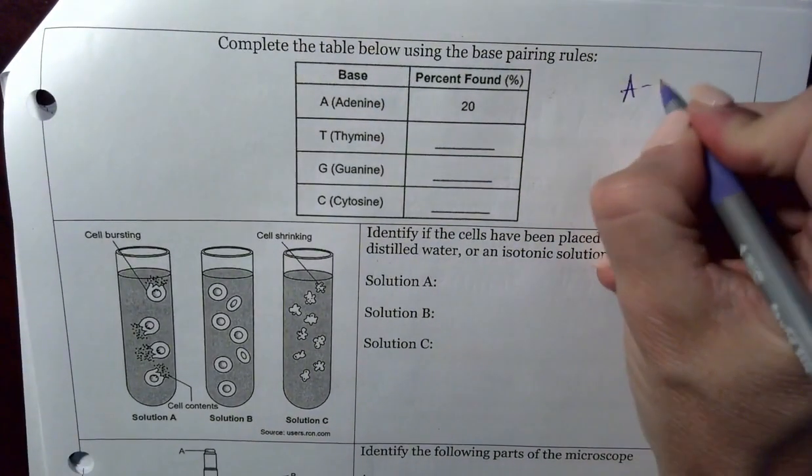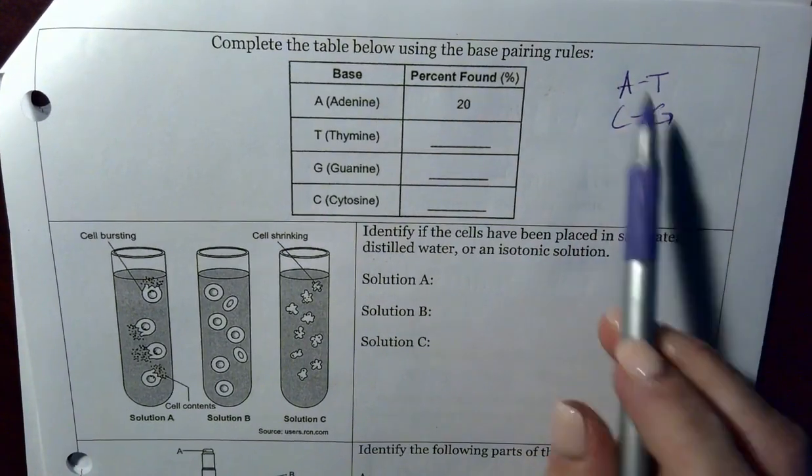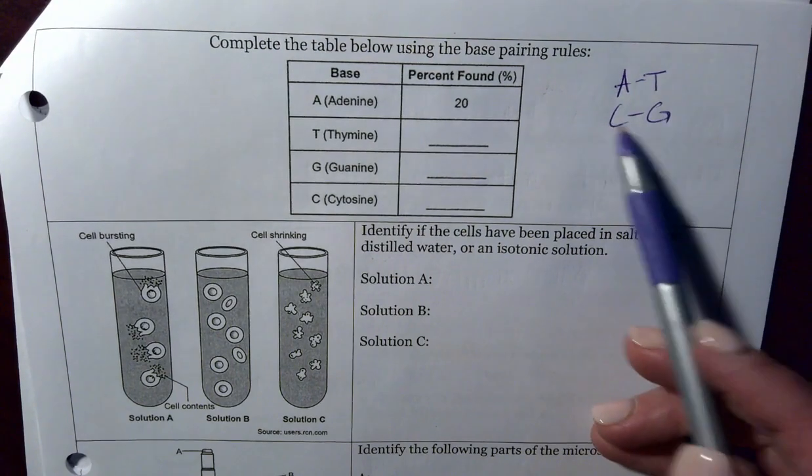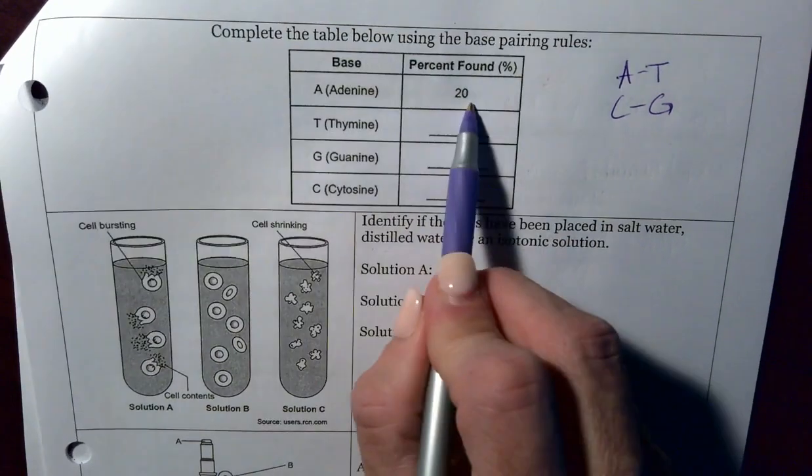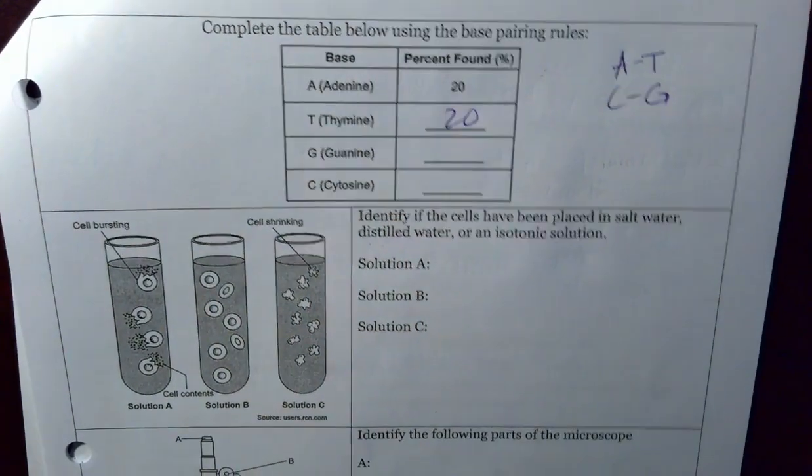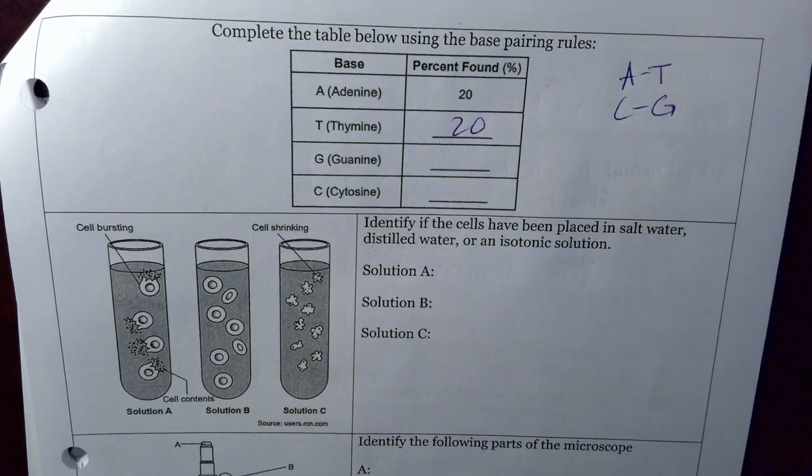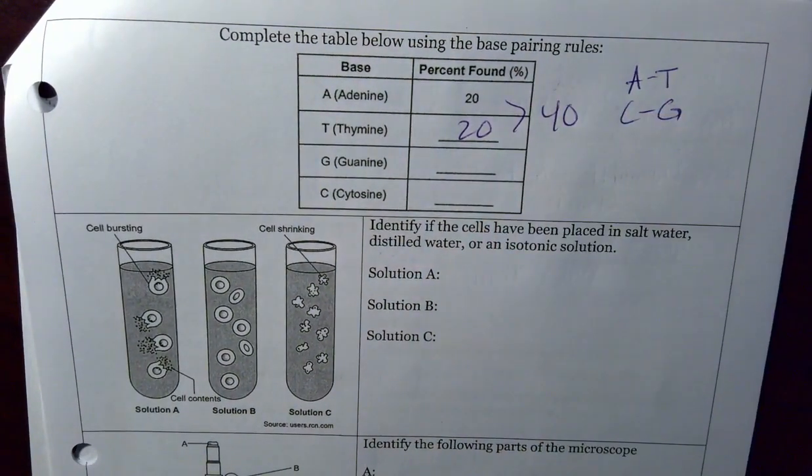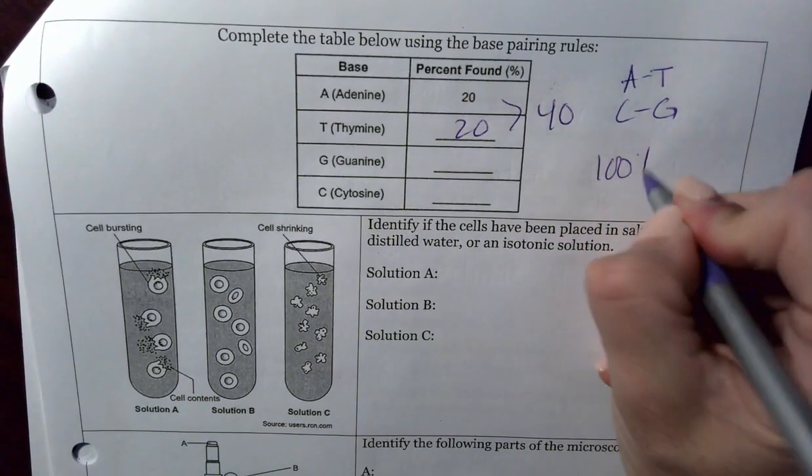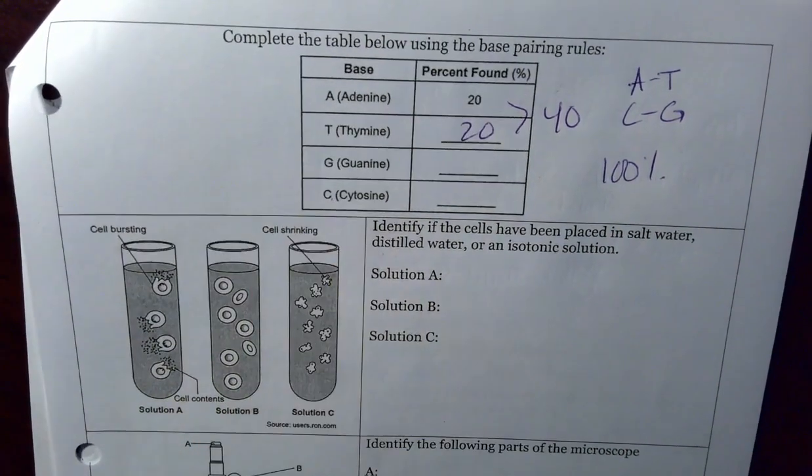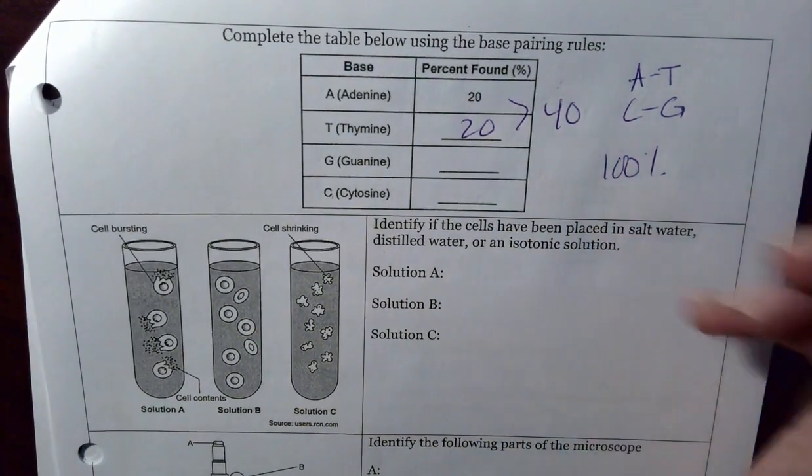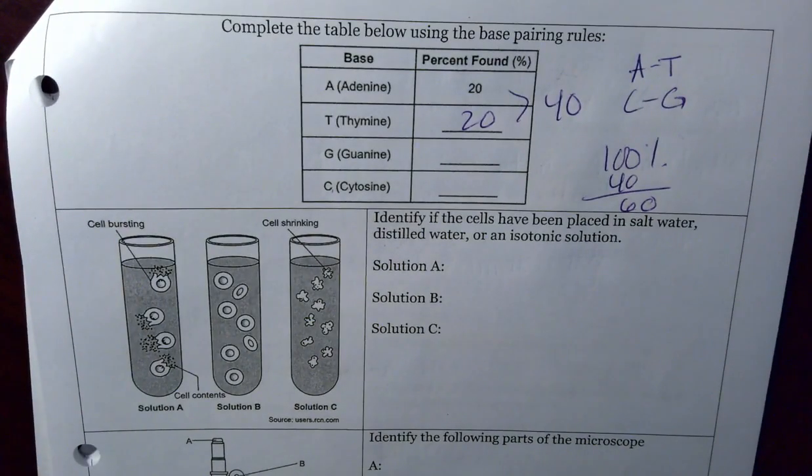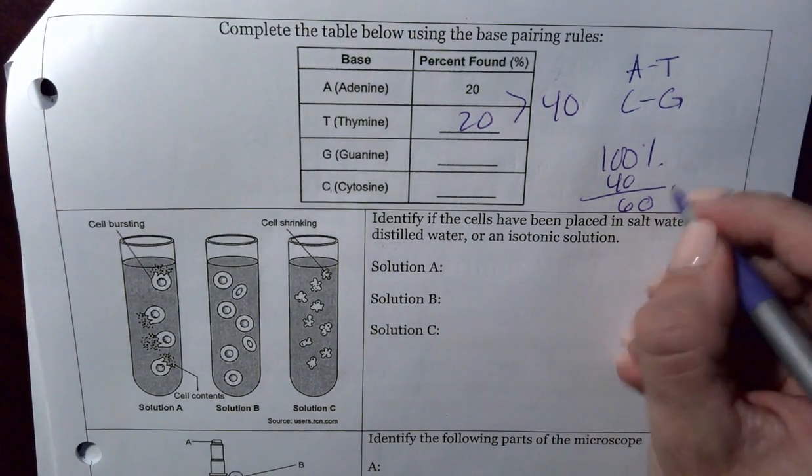All right, here we got the base pairing rules. Remember A and T go together, C and G. All teachers go crazy. Or some people say apples and trees, cars in the garage, whatever one works for you. If A, if there are 20 A, there are going to be 20 T. How do I know that? But they always match up. They're pairs. They're buddies. Whenever you see an A, you see a T. Now, those together equal 40%. We got to get up to 100. That's our goal. We got to figure out G and C. I have 40. 40 is already accounted for. To get rid of that 40, I got 60. Do not write 60 down for C and G. What you need to do is this is accounting for both of them. You got to divide.